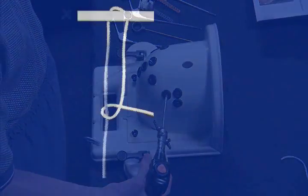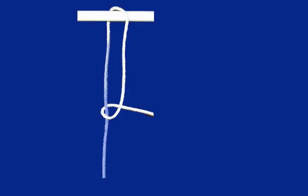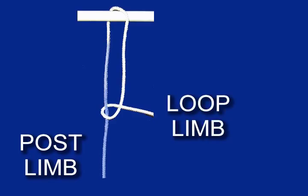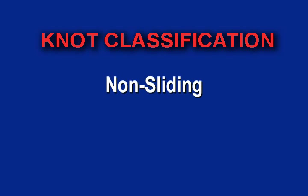The two ends of the suture are called limbs. The limb that the knot will be tied around is called the post or post limb. The other end is called the loop limb, and this is the limb which is tied into a knot around the post. Knots are then pushed down the post by the knot pusher, which advances the knot. Knots can be classified as non-sliding or sliding knots.